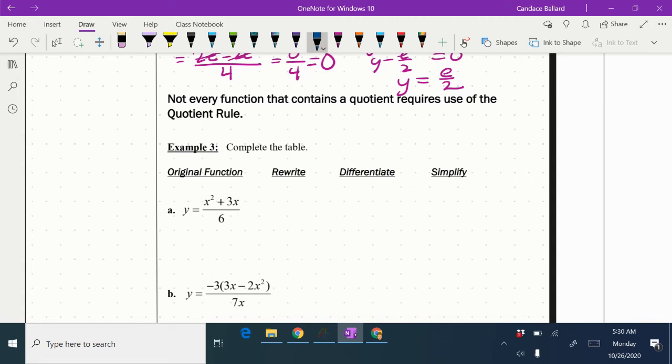So looking at A here, it looks like a quotient rule, but I noticed that there's no variable in the denominator. So I could just rewrite that as 1/6 x squared plus, and then it would be 3/6 x.